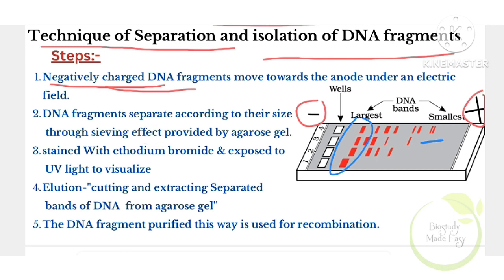The separated DNA fragments are stained with ethidium bromide and exposed to UV light. The DNA bands are not visible under normal light, but under UV light the DNA bands appear in orange color.